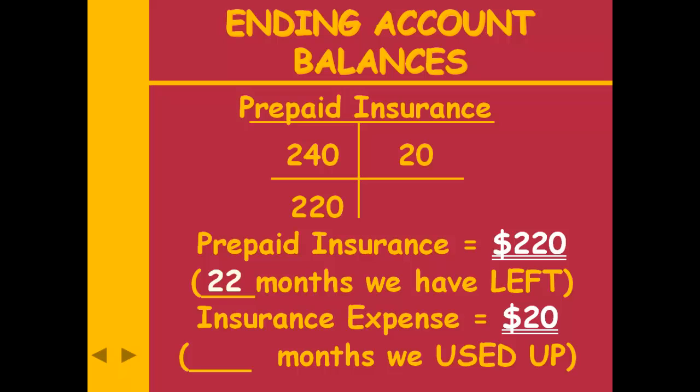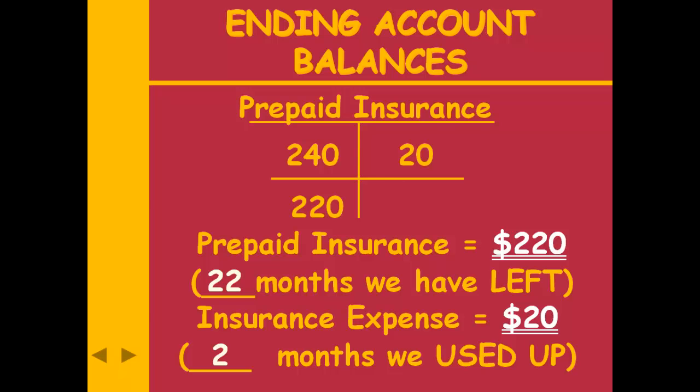The ending balance in insurance expense was $20, representing two months. We paid for 24 months of insurance in advance. That insurance went to one of two places: if I used it up, it became an expense; if I didn't use it up and still have it on hand, it stays on my books as an asset. The amount of my entry is how much I've used up.